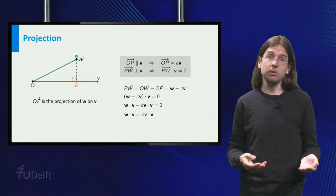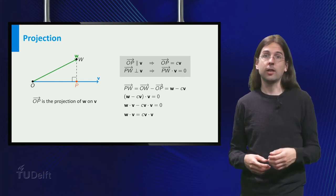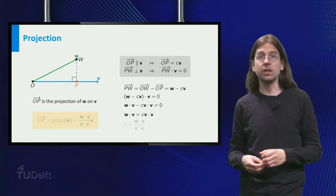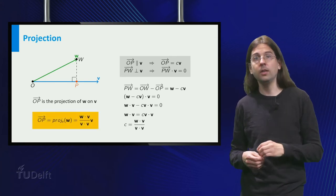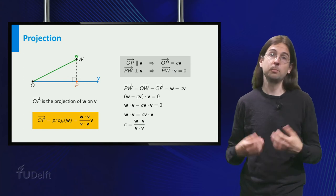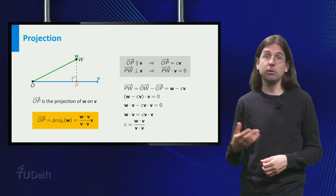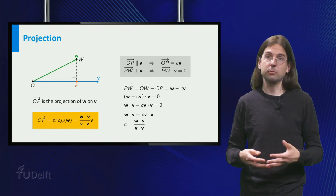Bringing the c times v dot v to the other side, we find that w dot v equals c times v dot v. So we can solve for c and obtain that the projection of w onto v equals the vector p equals w dot v over v dot v times v.